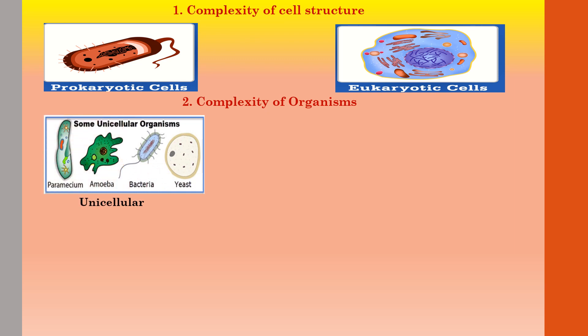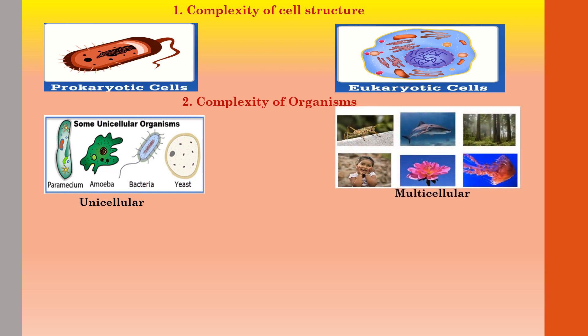The second criteria is complexity of organisms. Organisms are divided into unicellular and multicellular. Examples of unicellular organisms include Paramecium, amoeba, bacteria, and yeast. Examples of multicellular organisms include insects, fishes, trees, humans, birds, etc.